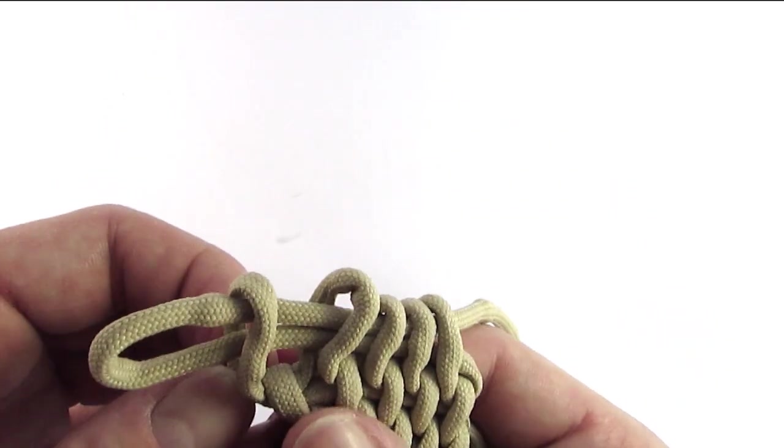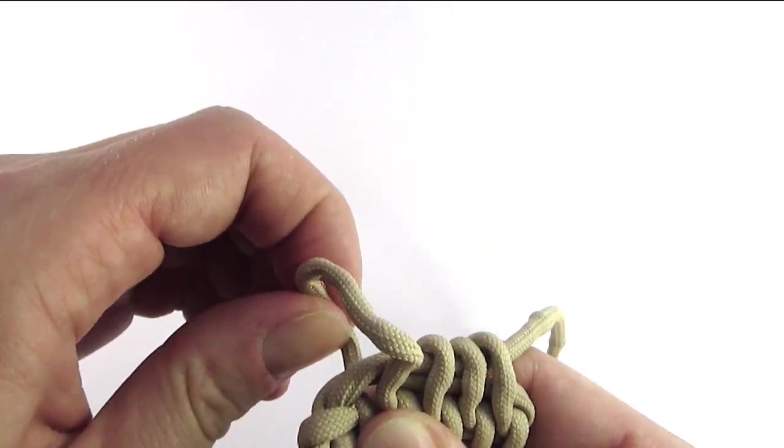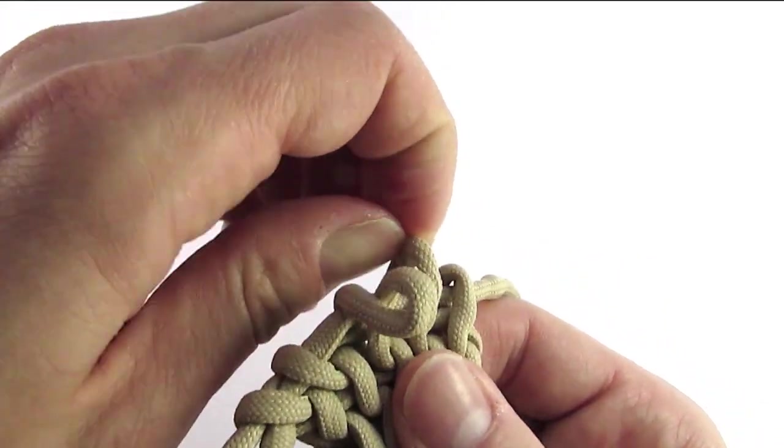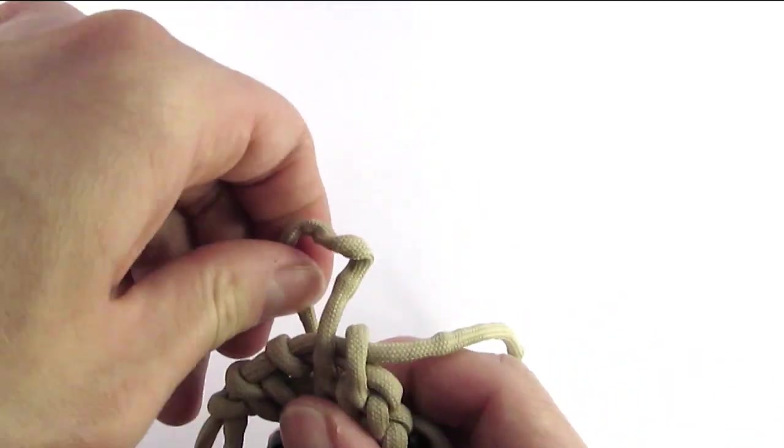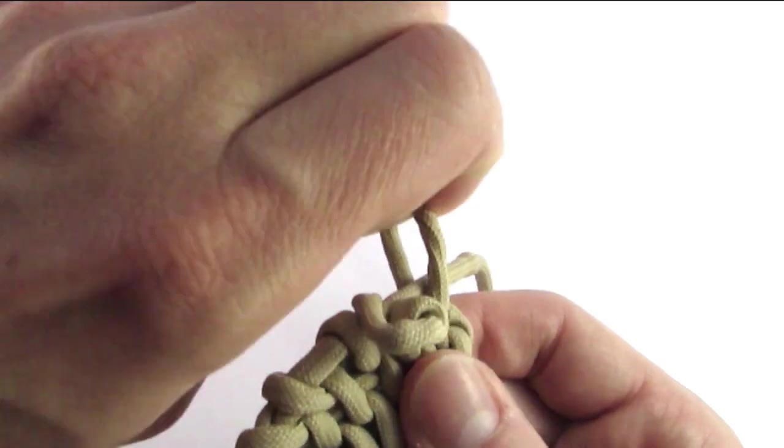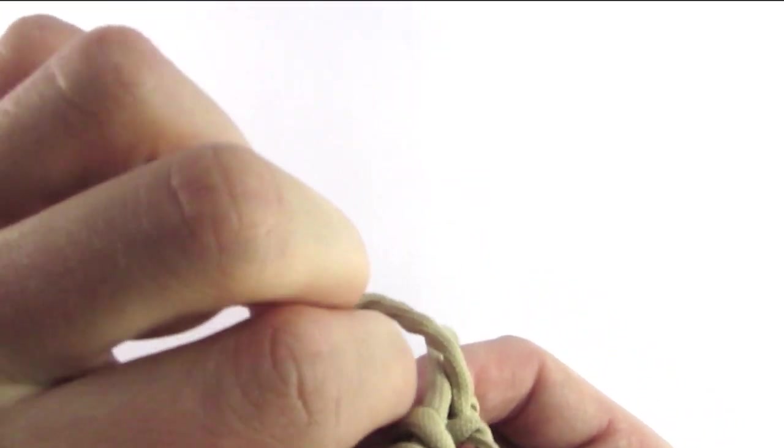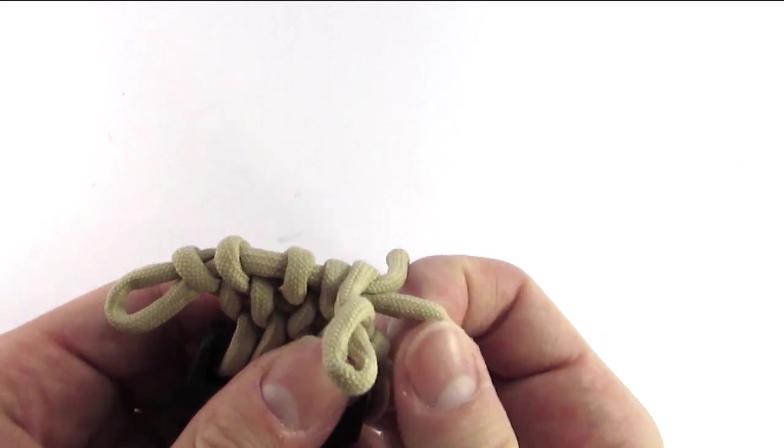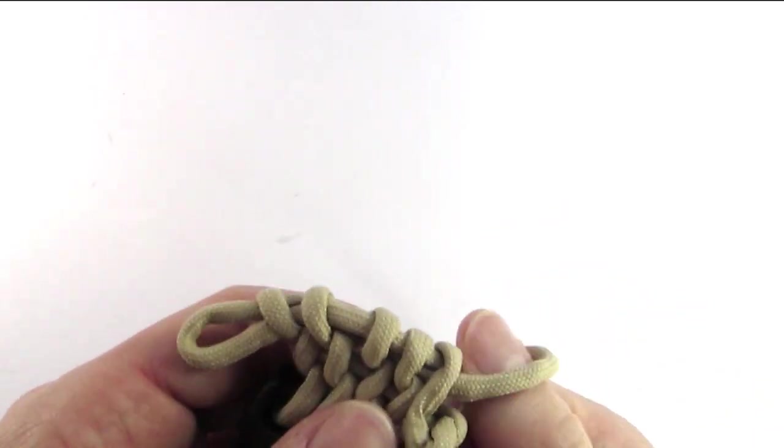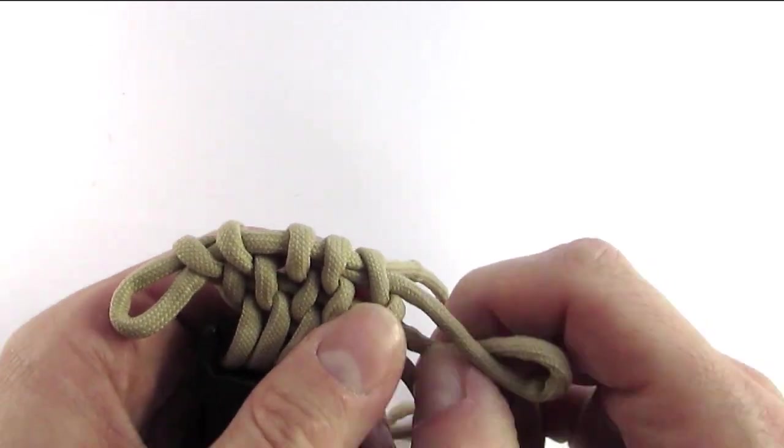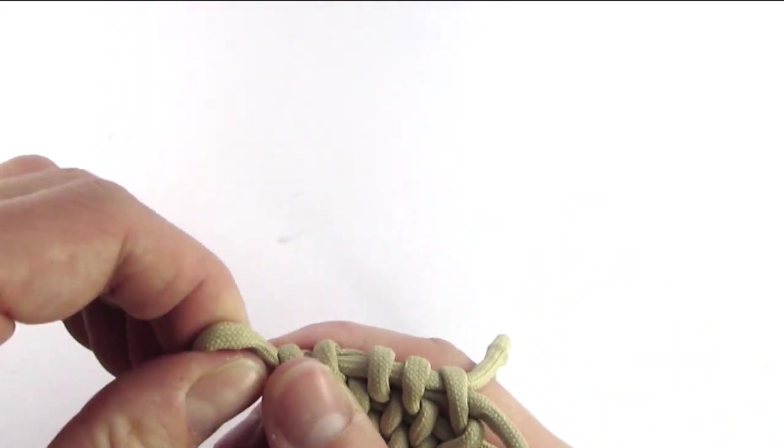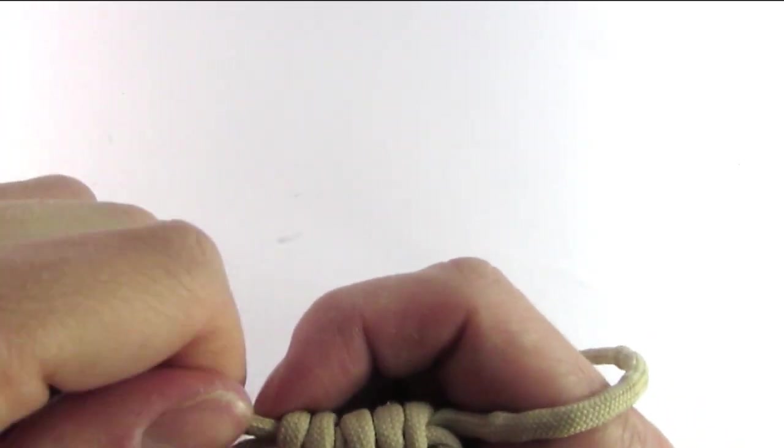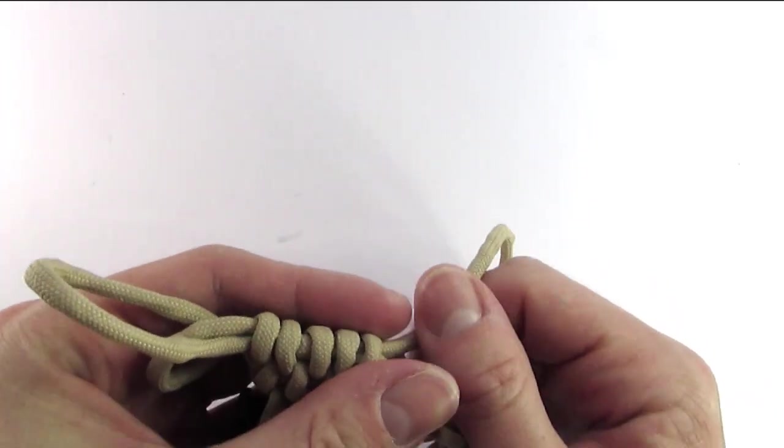We're going to start on the left, pulling on each of the loops to tighten it, coming to the right. Some twisting will occur. This is going to be a good practice for you to untwist the cord. After we've tightened the last loop, simply pull again this cord to the left